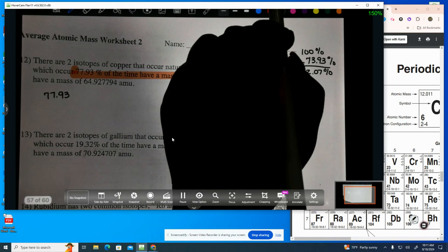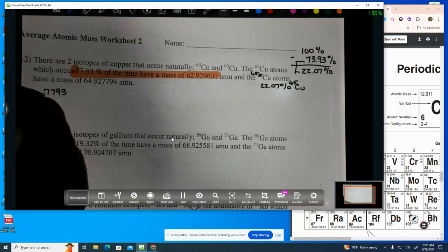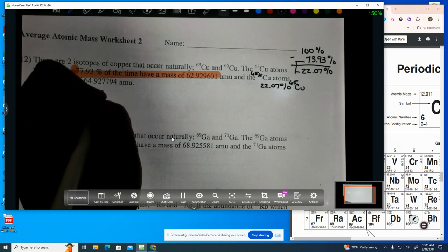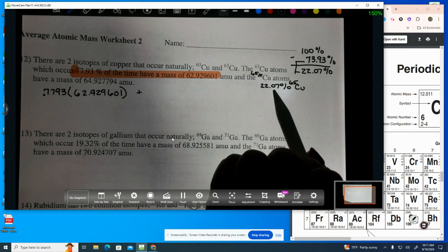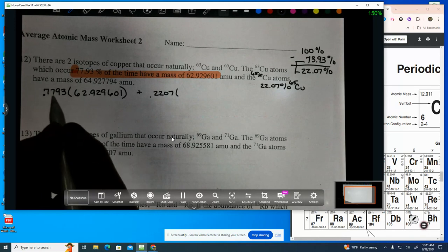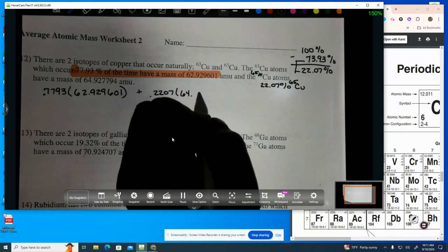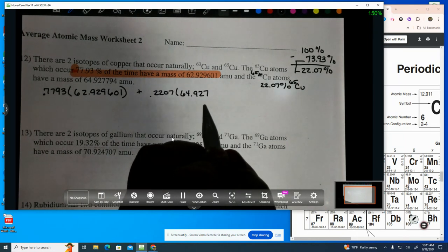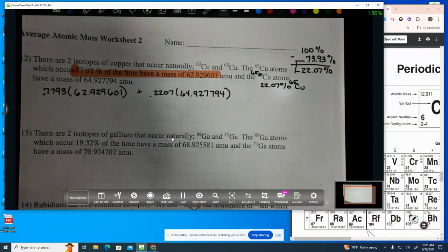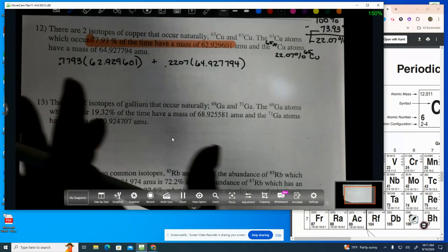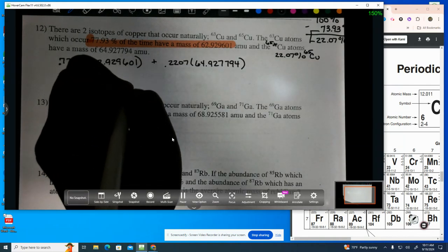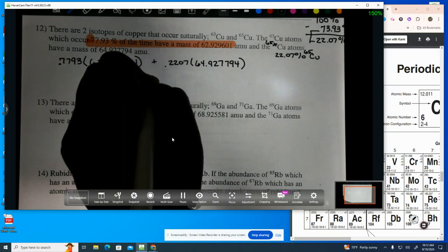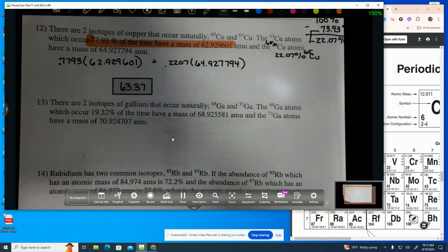77.93%. I'm going to move my decimal over as I do this. 77.93 times 62.929601 plus the new percentage is 0.2207 times 64.927794. And now we can just do some happy math. And you should get, if I did my math correct, 63.37. Somebody confirm that answer for me. What? Yes. And then stay in there. Can I take a screen sheet? No, just, what? There's screen sheets in there. No, I don't know what that is.